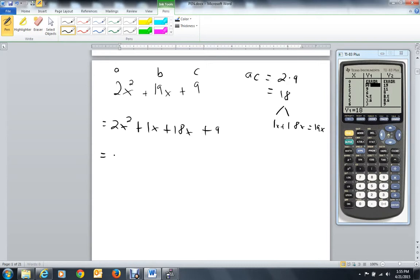Let's complete the factoring by grouping. These two have an x in common. When I divide it out, I have 2x plus 1. These two have a plus 9 in common. When I divide that out from each one, I get 2x plus 1. They each have a 2x plus 1 in common.